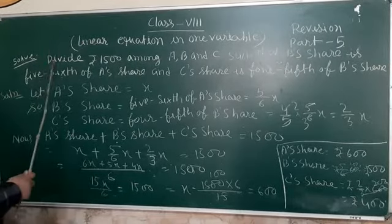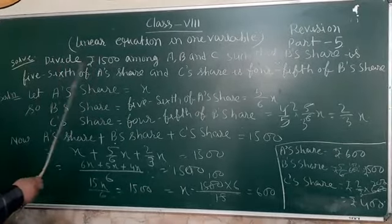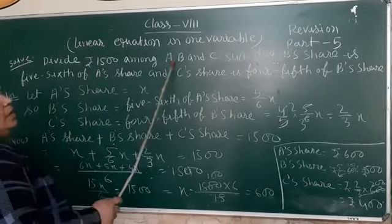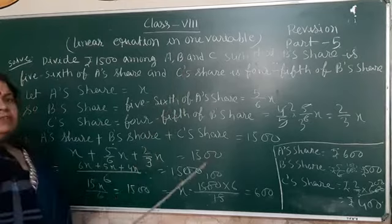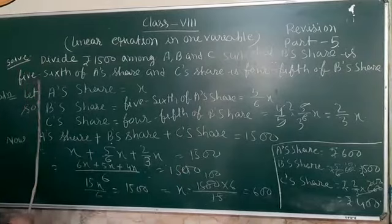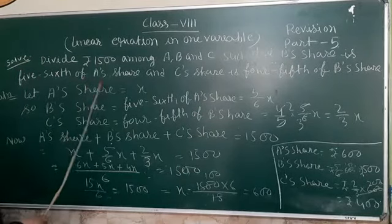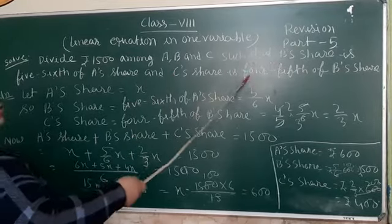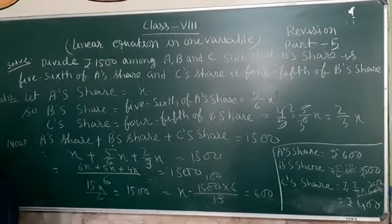the question is divide 1500 rupees among 3 persons A, B and C such that B's share is 5/6th of A's share and C's share is 4/5th of B's share.